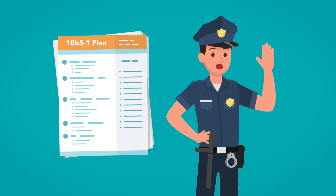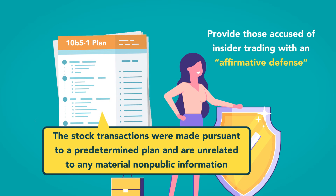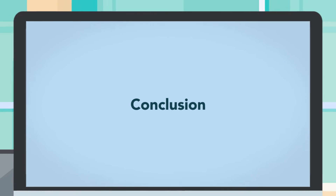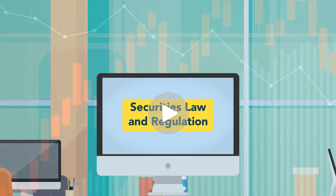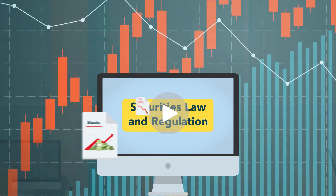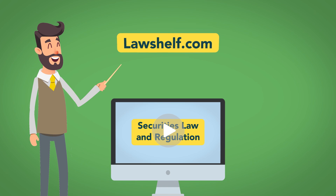10b-5-1 Plans do not prevent accusations or charges of insider trading. They do, however, provide those accused of insider trading with affirmative defenses that the stock transactions were made pursuant to a predetermined plan and are unrelated to any material non-public information. Thank you for participating in our video course on securities law and regulation. We hope that you now have a better understanding of the world in which ownership of publicly traded companies is regulated and restricted. We hope that you will take advantage of our other business law courses, and we welcome any feedback or questions that you may have. Best of luck!